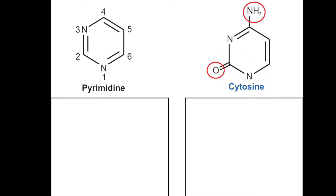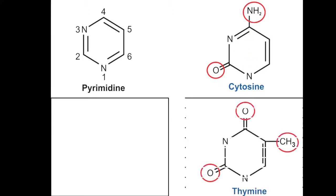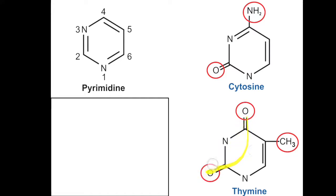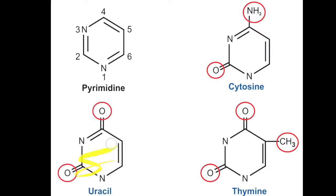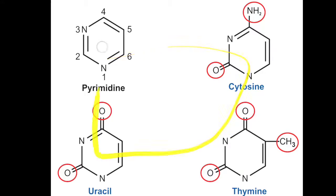Cytosine is 2-oxo-4-aminopyrimidine — oxygen at position 2 and an amino group at position 4. Thymine is 2,4-dioxo-5-methylpyrimidine — two oxygen molecules and a methyl group at position 5. You can remember thymine contains a methyl group. Uracil has no methyl group and no amino group — only two oxygens — and is called 2,4-dioxopyrimidine. All three form the pyrimidine ring structure.